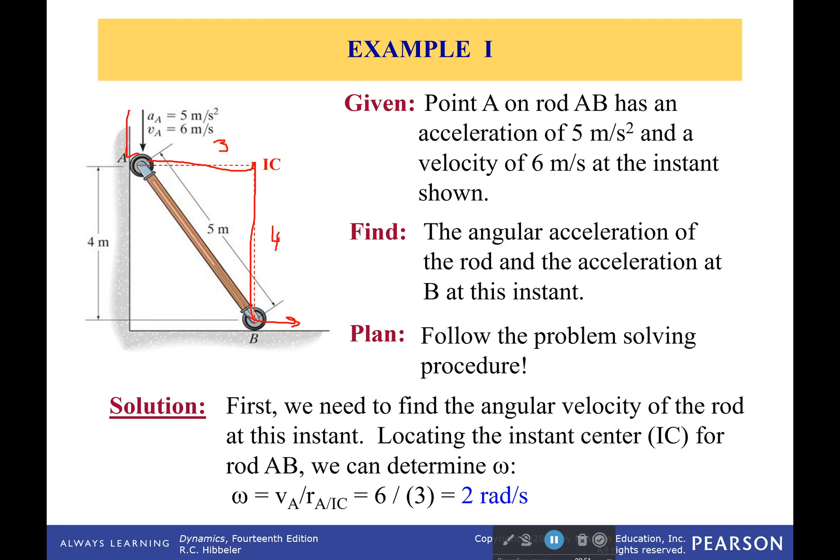And from that, we can find the angular velocity. Because we know this velocity right here is 6, the distance is 3, so the angular velocity would have to be 2. 6 divided by 3 is 2.